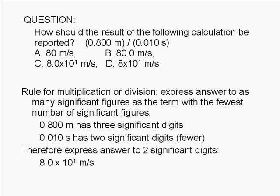80.0 meters per second has 3 significant digits, 8, 0, and 0.